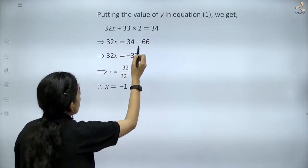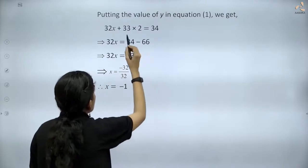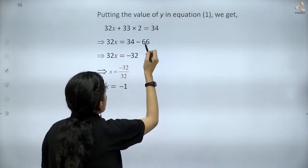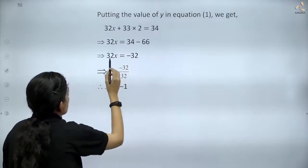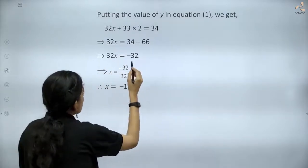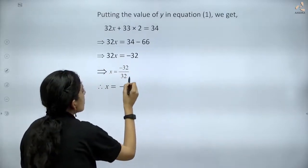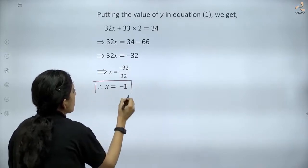Transposing to the right hand side, we get 32x = -32. Therefore, x = -32/32 = -1.